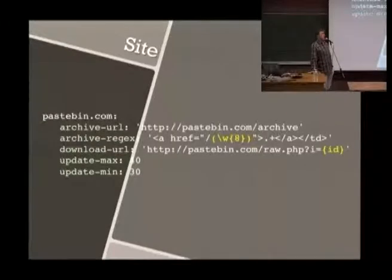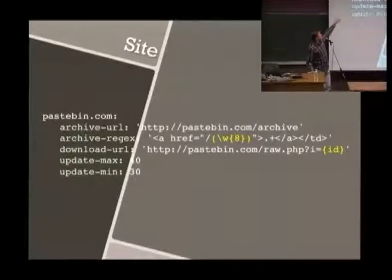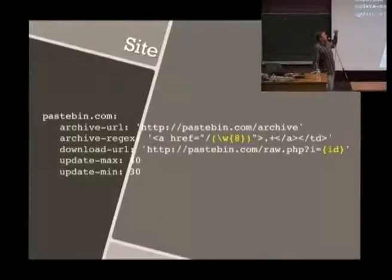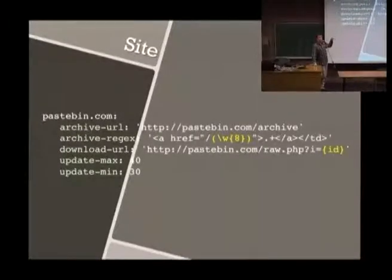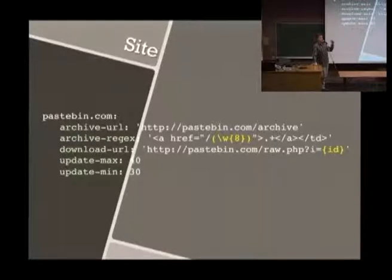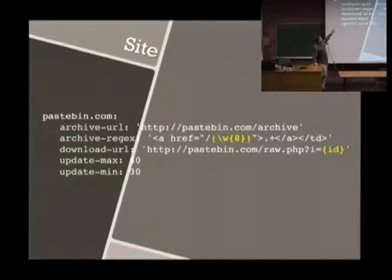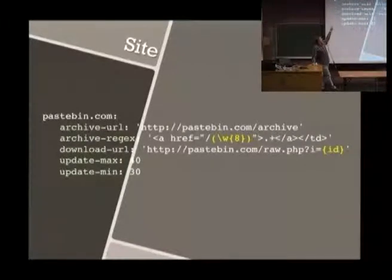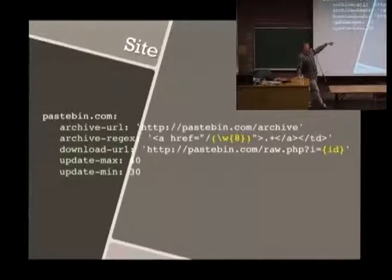The site configuration itself is extremely easy. You can add your own site and share them. For Pastebin, you provide the archive URL — the page containing the list of the last pastes (around 50 or 80 for Pastebin) — along with the regular expression to extract the unique paste ID, and the URL where it should download that ID. There are also two parameters, update_max and update_min, which add variable timing to the download so it checks the archive URL in a range between 30 and 40 seconds, making automated detection less likely.